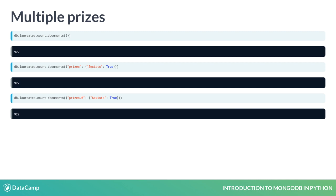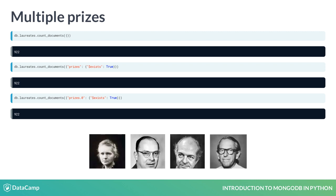You can reference an array element by its numerical index using dot notation. Thus, this expression counts documents that have a non-empty prizes array. We see, to our relief, that all laureate documents contain at least one prize. Are there laureates with more than one prize? Yes! We see that Marie Curie is in this group, along with a few other people you may recognize.